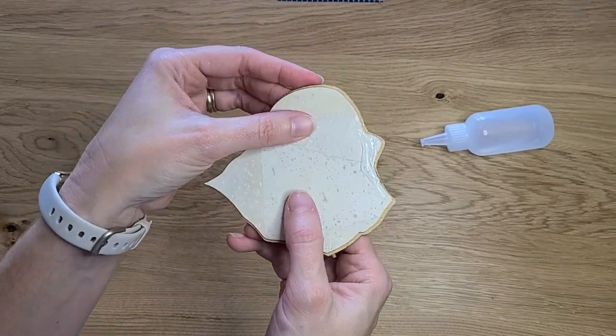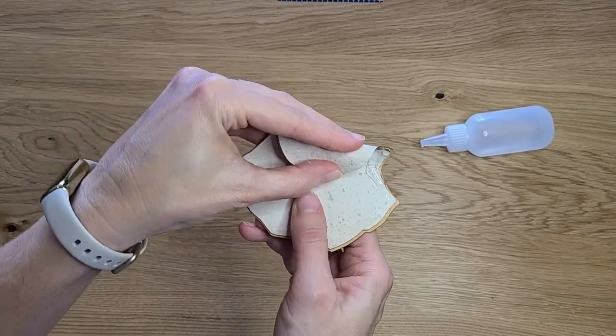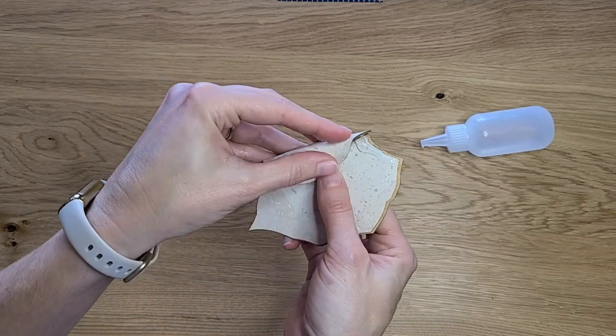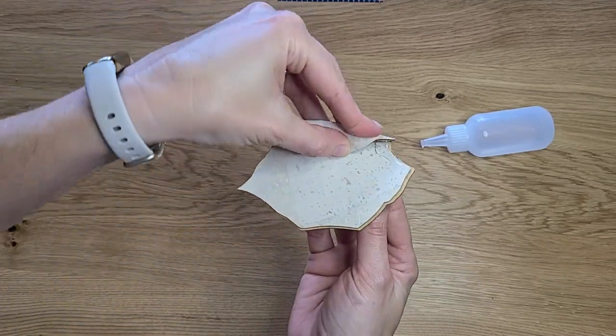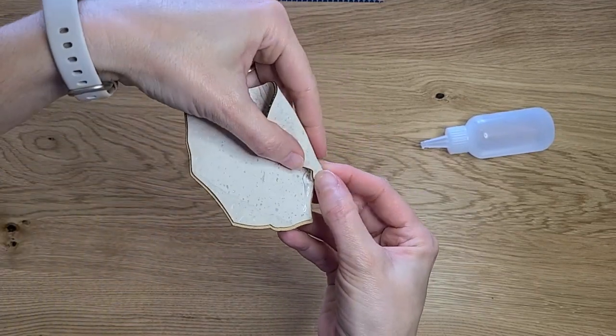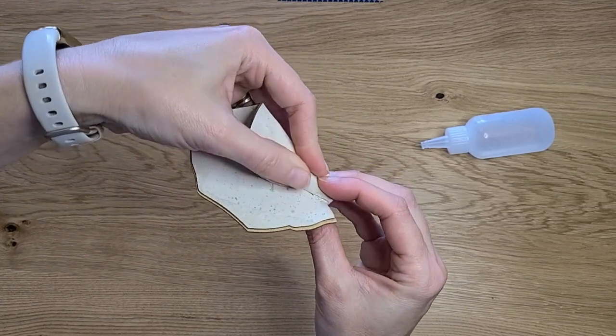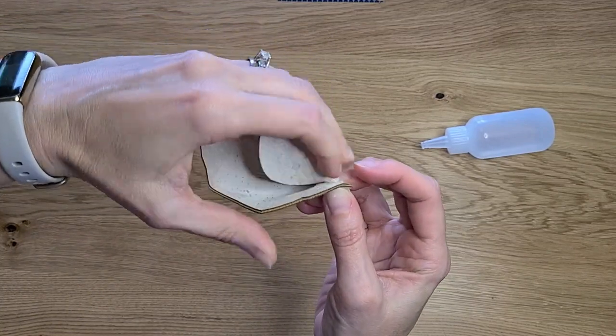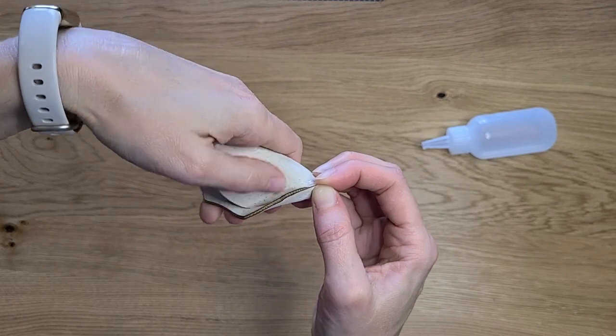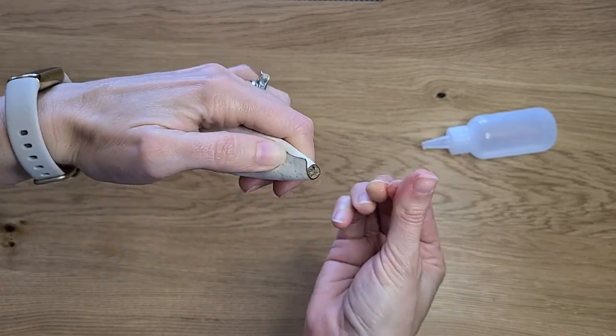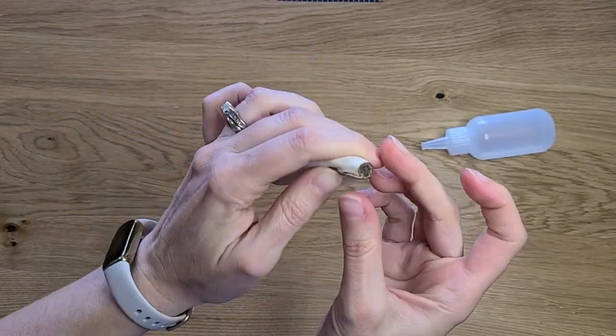You're going to want to take this rounded edge, fold it in and up, and you want to just wrap almost in a cone shape.